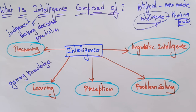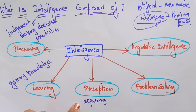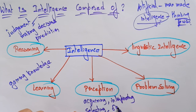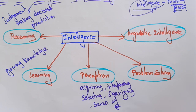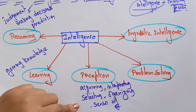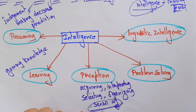Next, intelligence is composed of perception. Perception is a process of acquiring, interpreting, selecting, and organizing sensor information. So the intelligence is composed of perception because perception is a process of acquiring and interpreting, selecting whatever is in the environment, and organizing everything using sensor information.